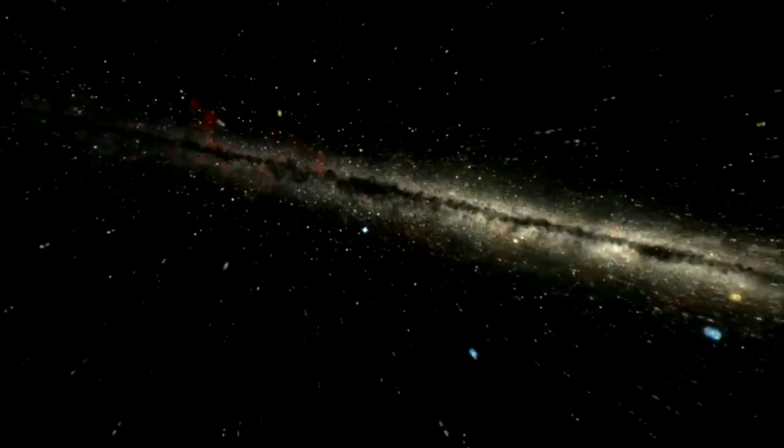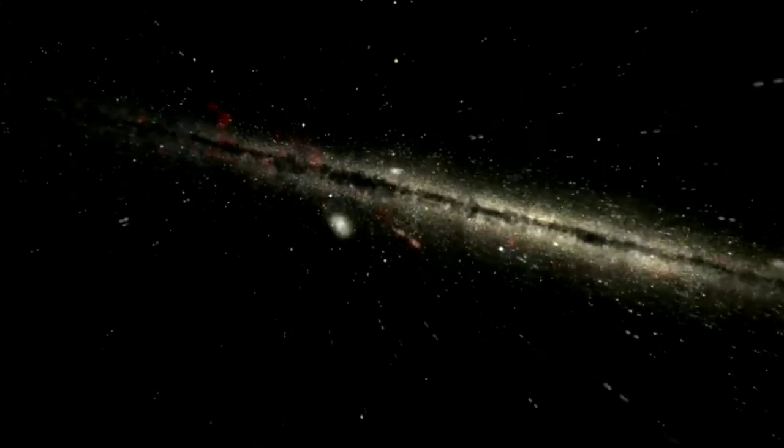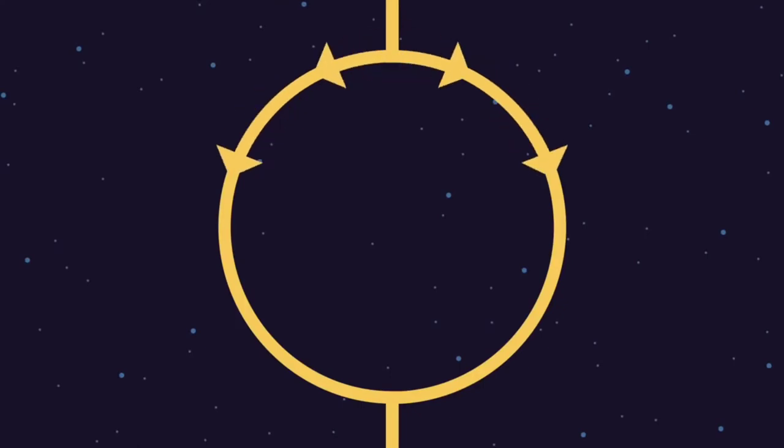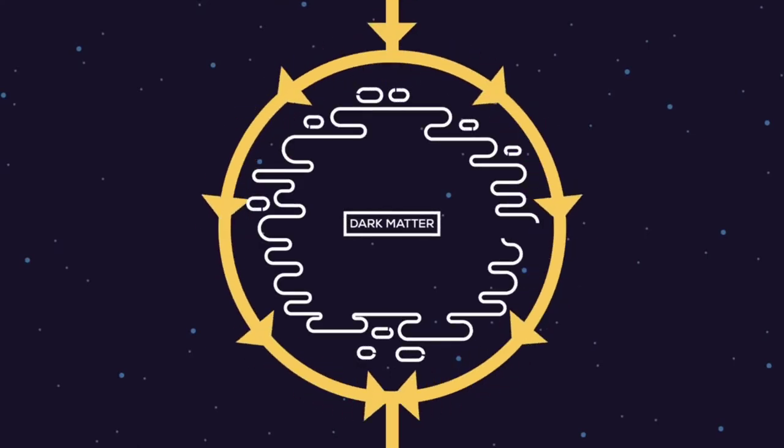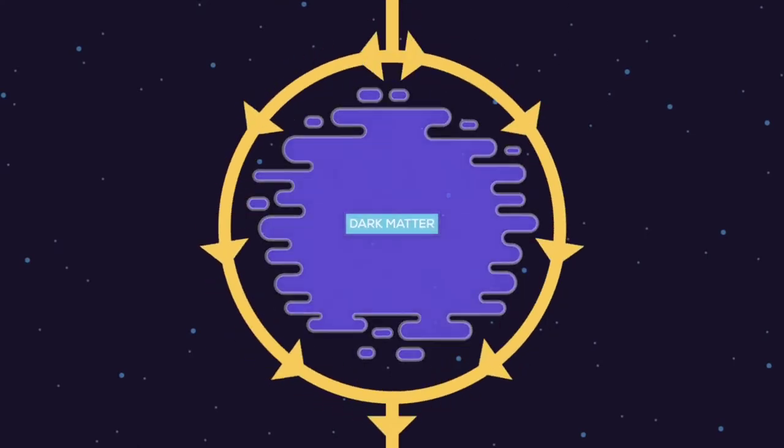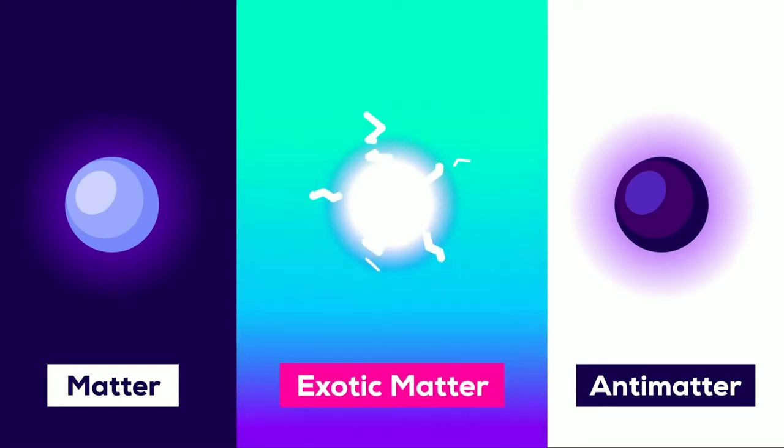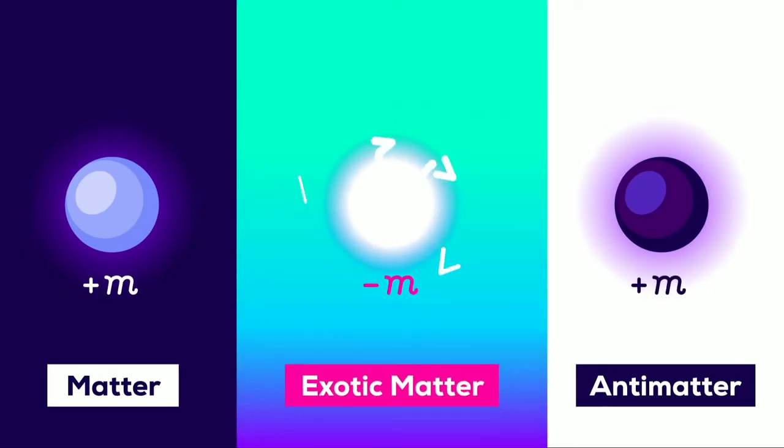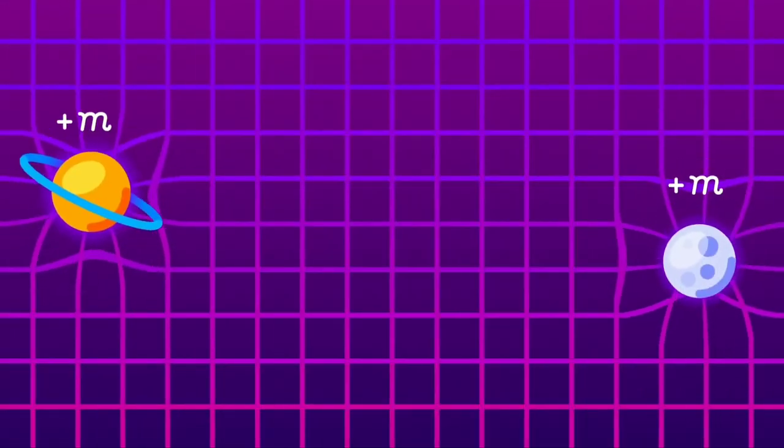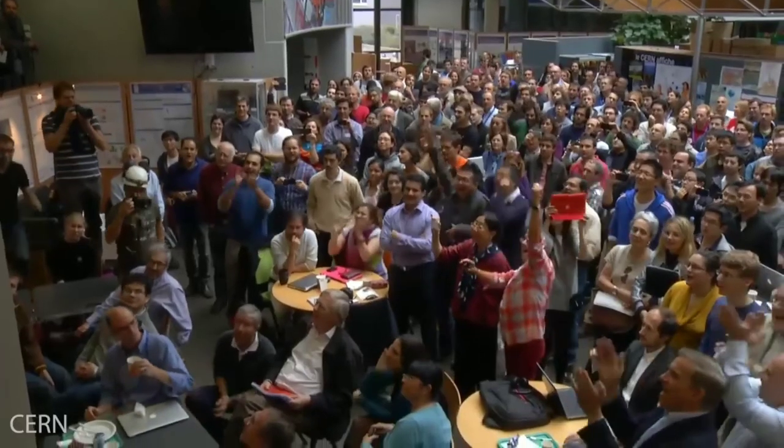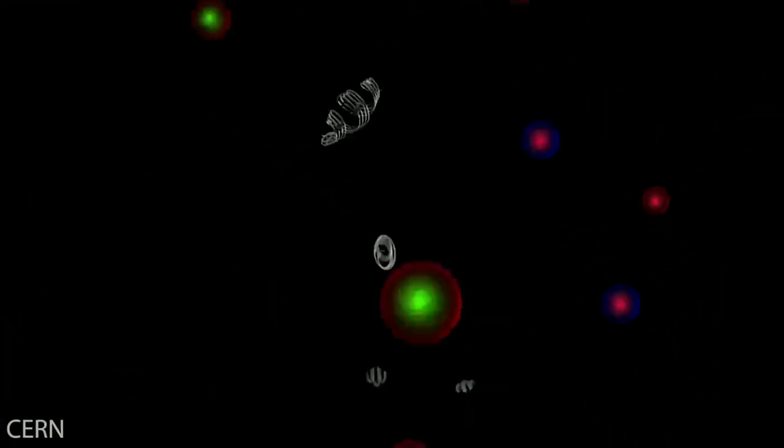Scientists have a few ideas for what dark matter might be. One leading hypothesis is that dark matter consists of exotic particles that don't interact with normal matter or light but that still exert a gravitational pull. Several scientific groups, including one at CERN's Large Hadron Collider, are currently working to generate dark matter particles for study in the lab.